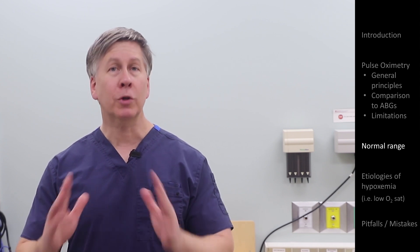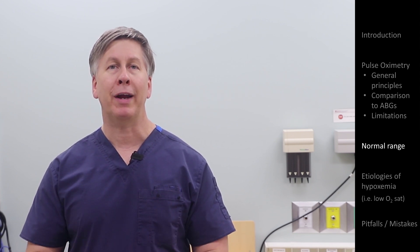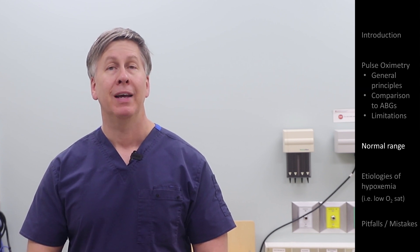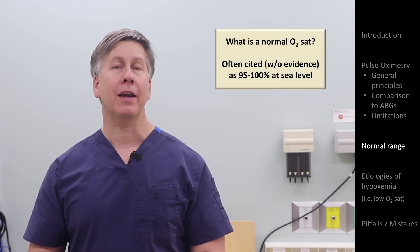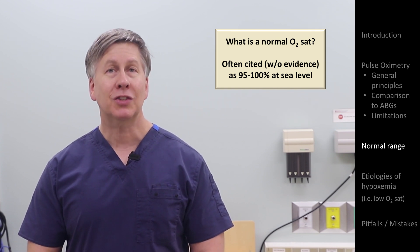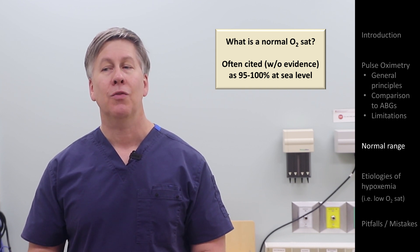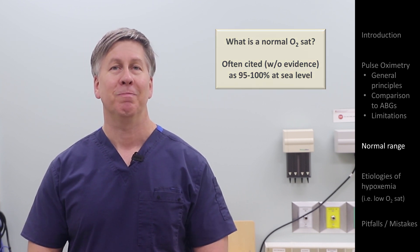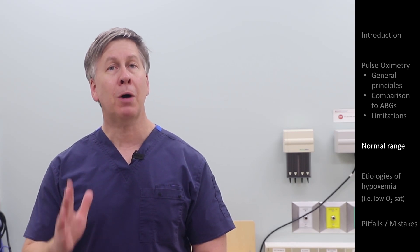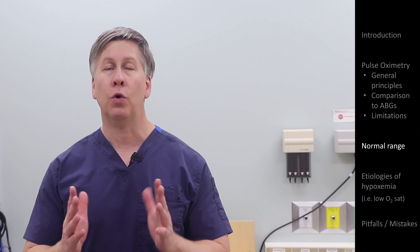Having discussed all those limitations with measurement, what actually is the normal range for oxygen saturation in healthy people? It's often cited online as 95 to 100% when at sea level, but consistent with so-called normal ranges for other vital signs, this one is lacking strong evidence. It's consistent with personal experience, but there is some published literature suggesting this range may be too high in older patients.